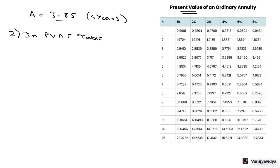Now, 3.85 — if we look at the annuity factor table, 3.85 at 4 years lies between 1 and 2 percent. So we know that the discount rate is in between 1 and 2 percent.